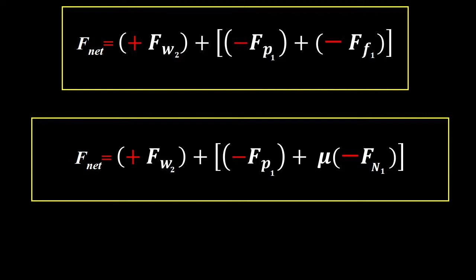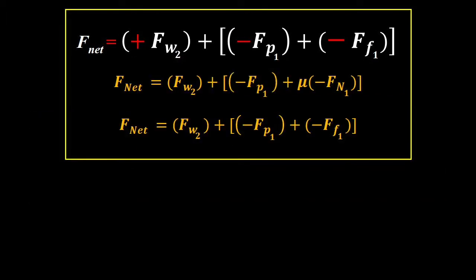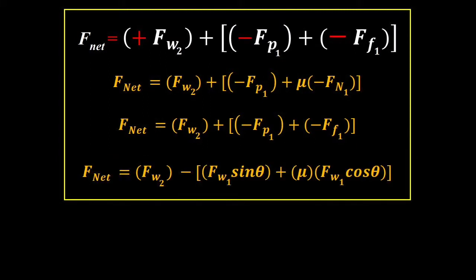And then the next one, where FF is actually going to be mu FN, and that will be FF1. So there are your contrary forces, so now all you have to do is plug in. What we'll do is we will derive the actual equation, but you could actually, in the meantime, plug in the values that you've generated.